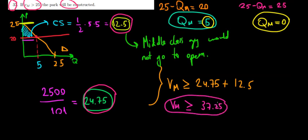Now let's see what the answer key tells us. If the valuation is greater than 25, the park will be constructed. That's false. That's not enough. It has to be at least 37.25 and we are done.